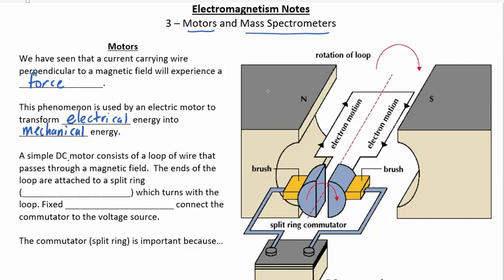So, a simple DC motor, you can see the example on the side here, basically just consists of a loop of wire that passes through some sort of magnetic field. Now, the ends of the loop are attached to a split ring, and this split ring is often called a commutator. And this turns around with the loop.